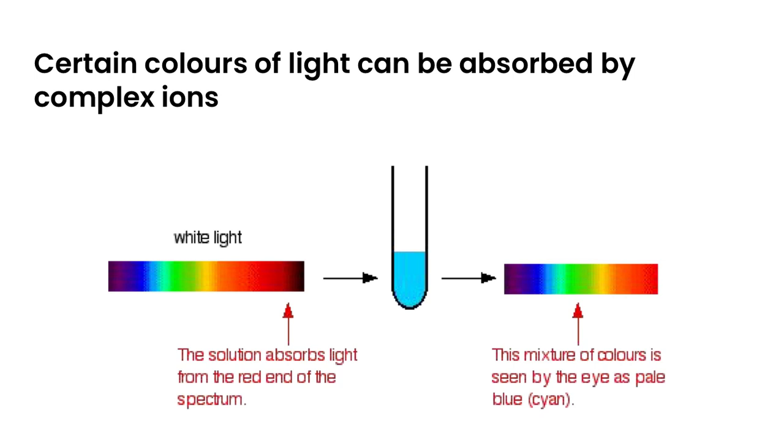So when we shine light on complex ions, certain colors of light can be absorbed by the complex ions. So if, for example, we take a solution of copper 2 sulfate and we pass white light through this copper 2 sulfate solution, the orange end of the spectrum is absorbed. And so when that orange end of the spectrum is absorbed, it's going to promote an electron from the lower set of d orbitals to the higher set, and then the light coming out of this solution is everything but that orange end of the spectrum. So it results in a bluish color, which is the complementary color to orange, which is what we're seeing. We're seeing everything but the light that is being absorbed.